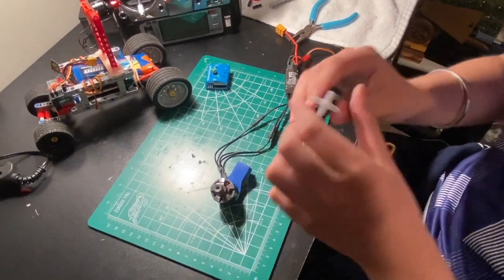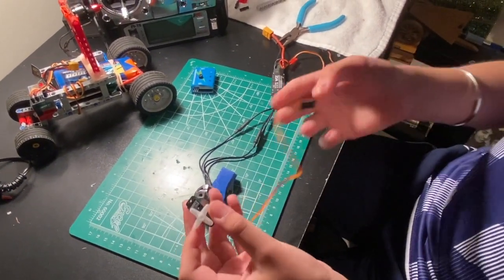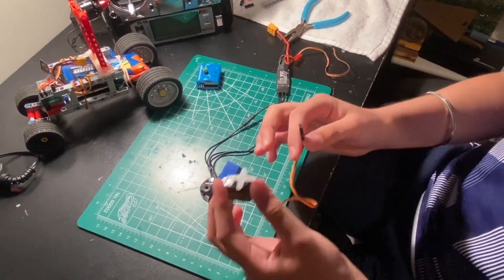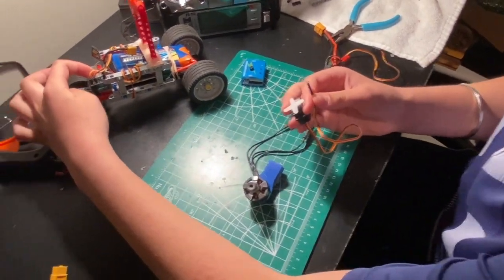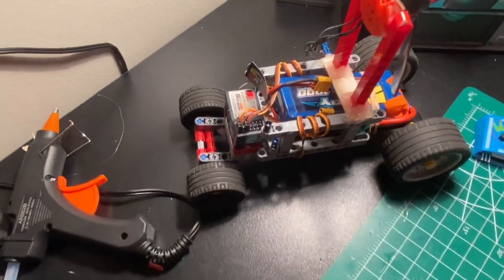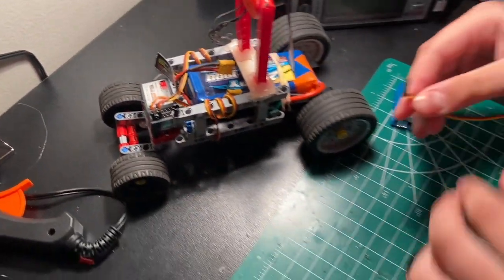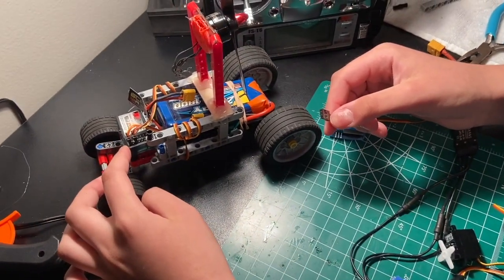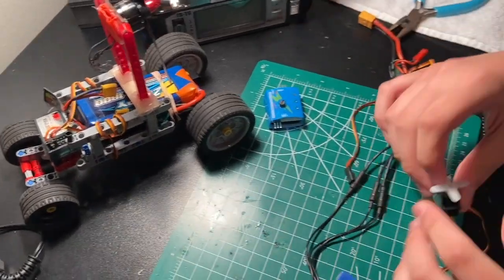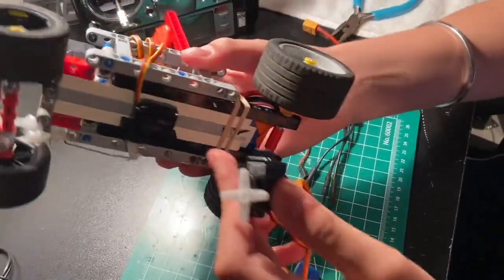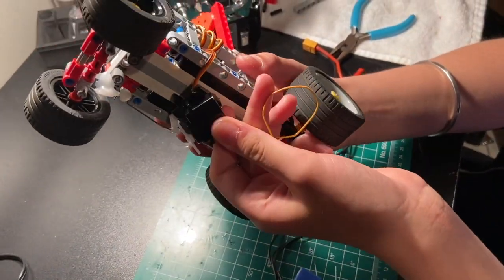For the servo motor over here, this plugs in directly to your receiver. My receiver is right over here on the car. And this ESC also plugs into the receiver. My servo motor on this car is mounted right over there, and this is used for the steering mechanism.